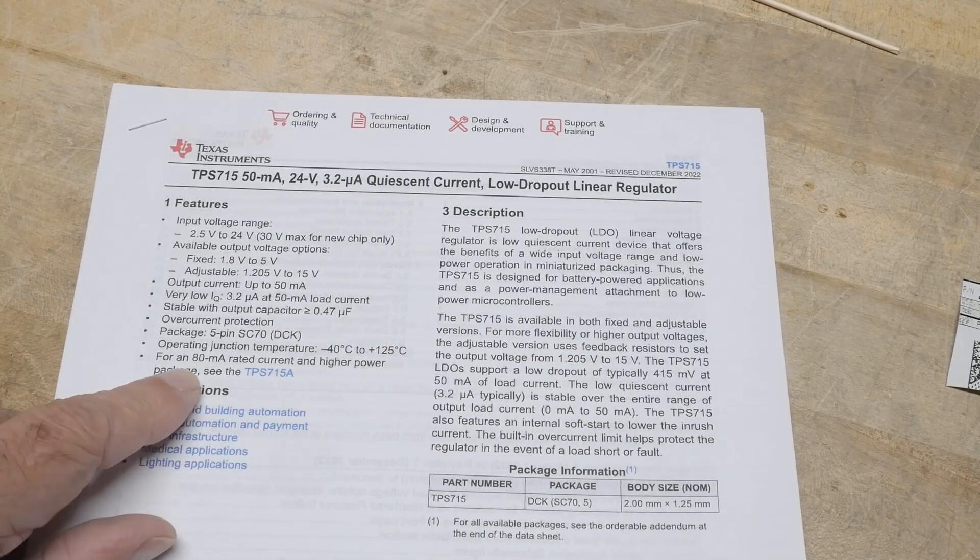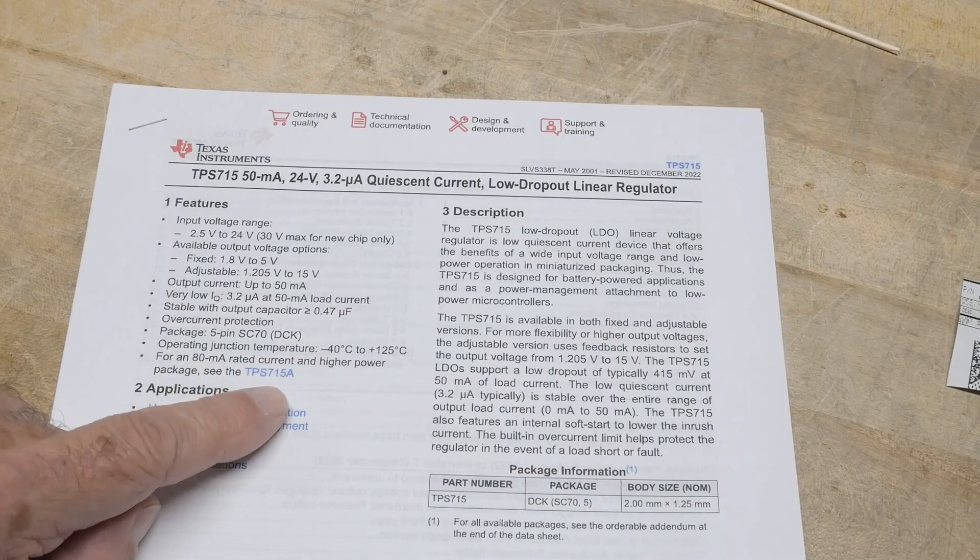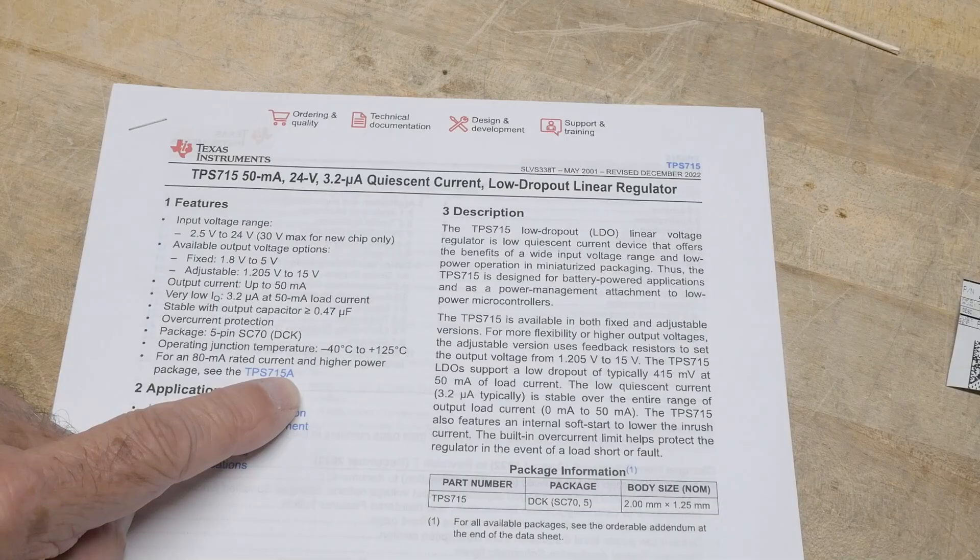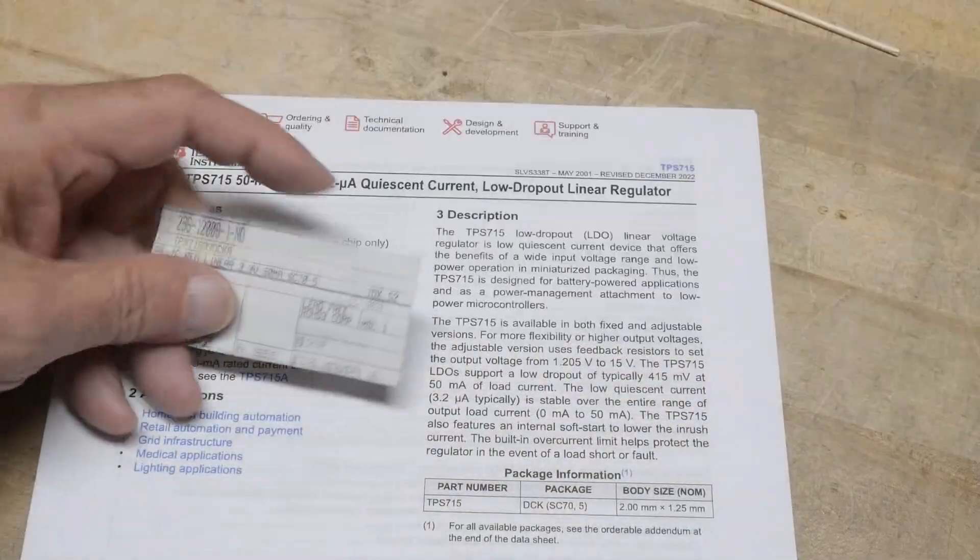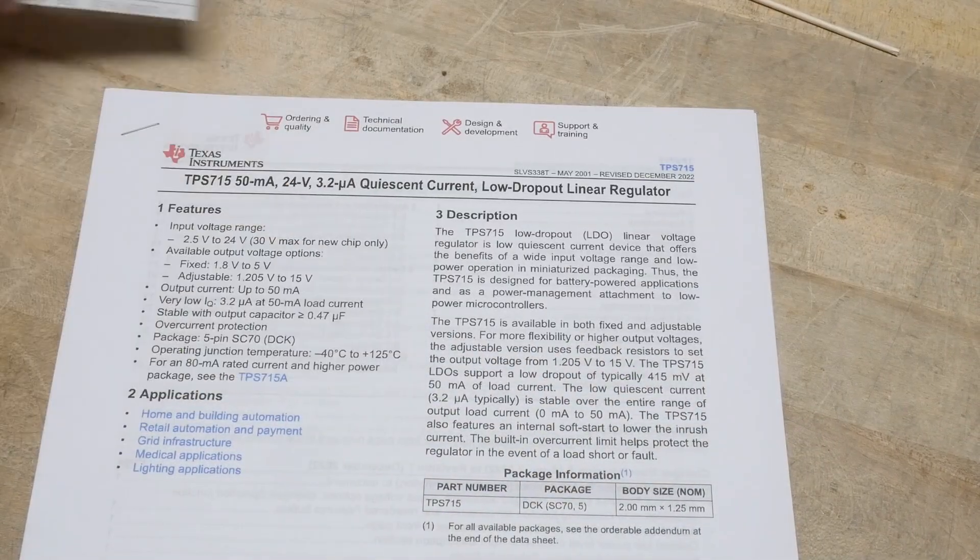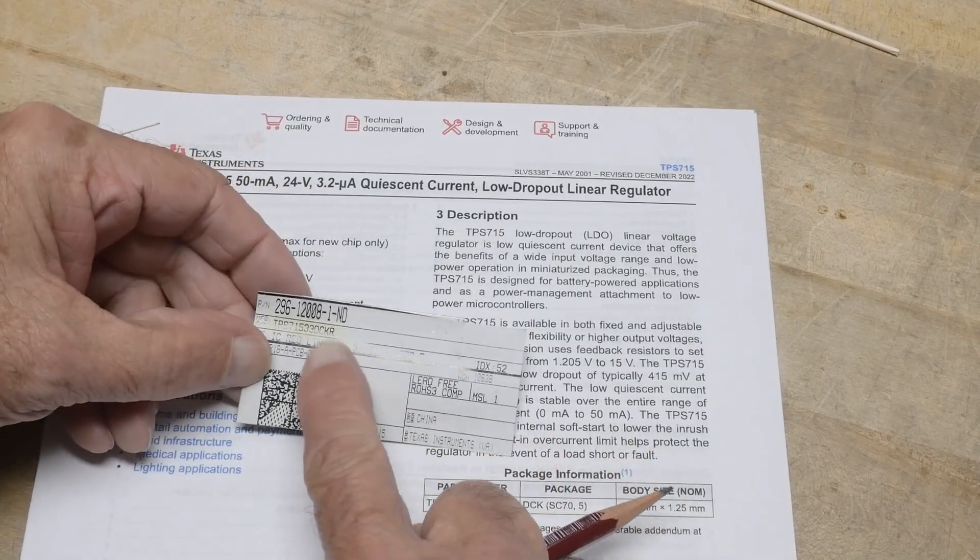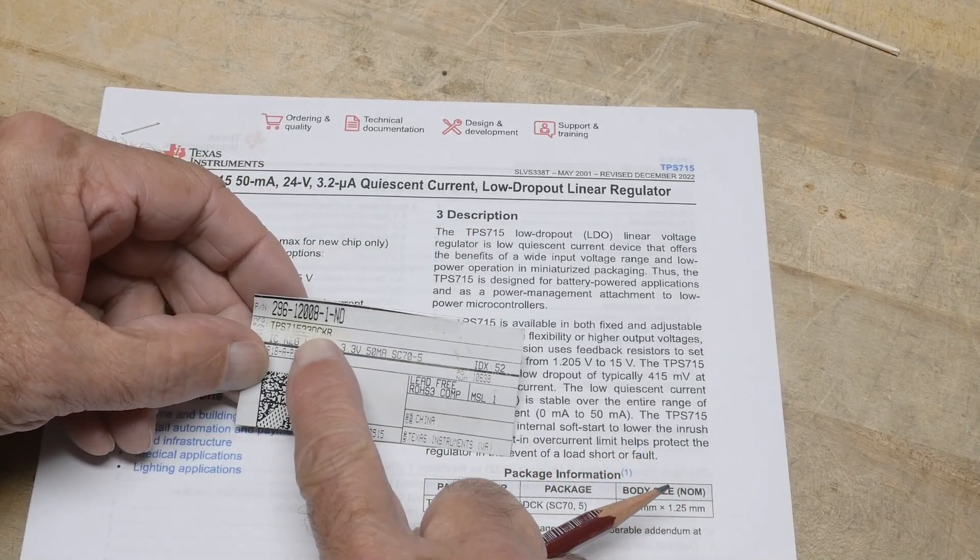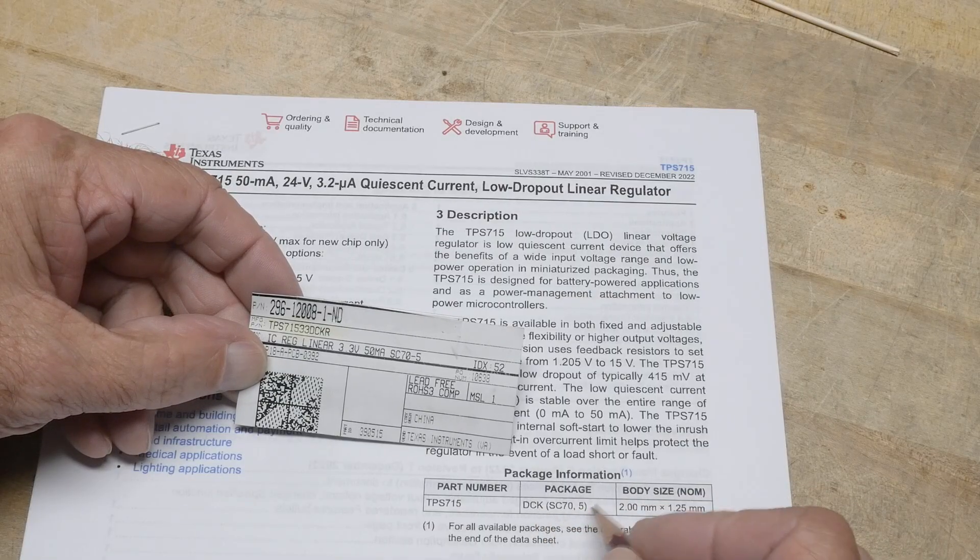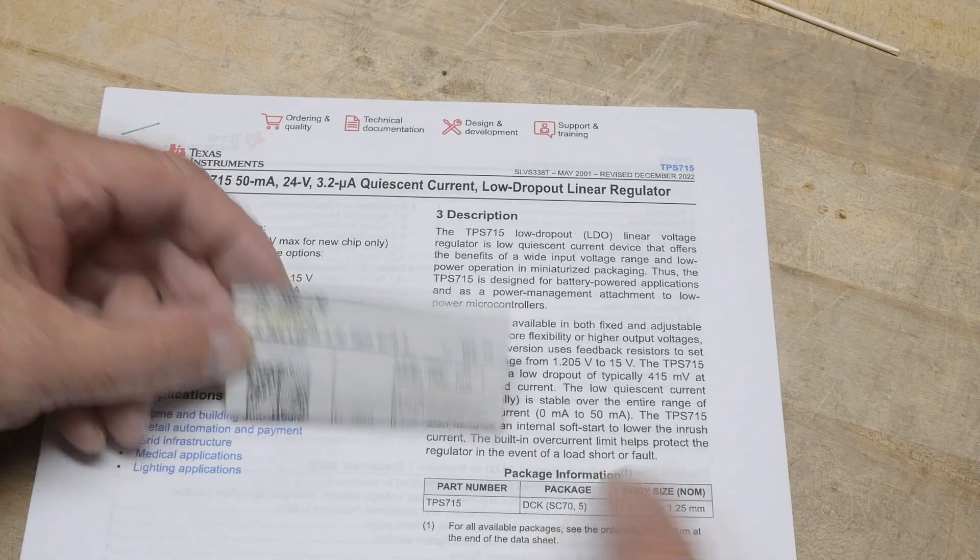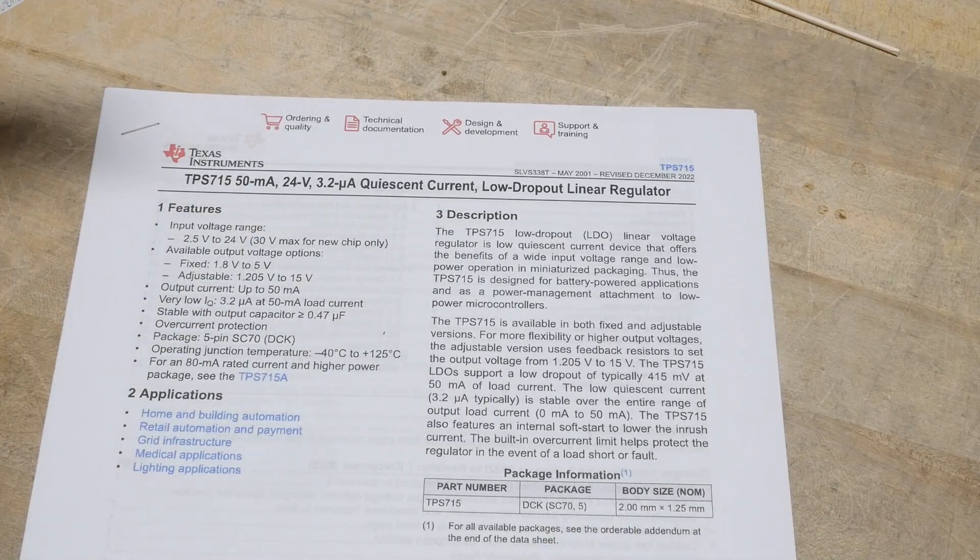And then if you want more, it says if you want more 80 milliamps, you can get this one, which is the A version, I guess, is a little bit better. I don't think I have the A version now, right? No. Let's see here. The package is the DDCK. That means the SC50. That was the one I was trying to think of, the SC50 package.